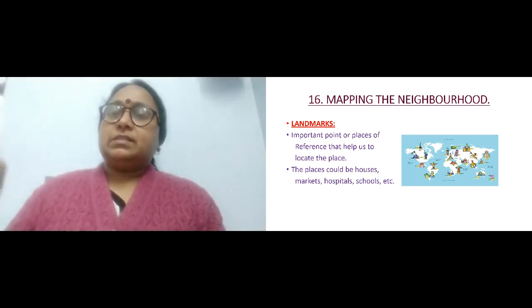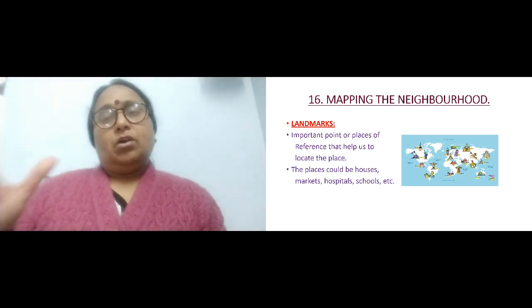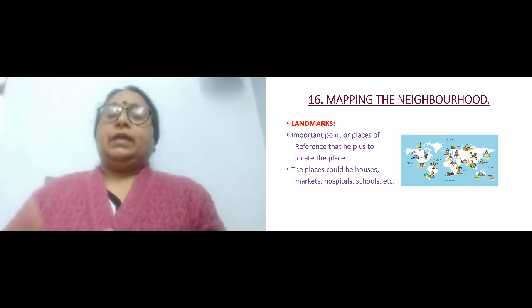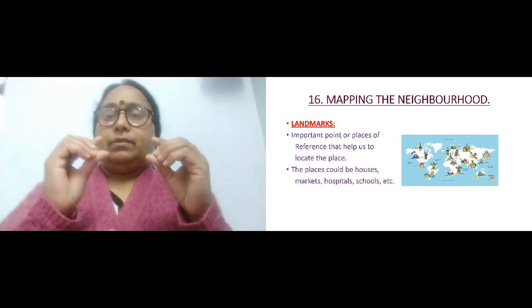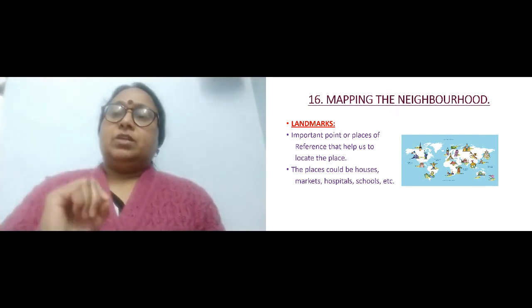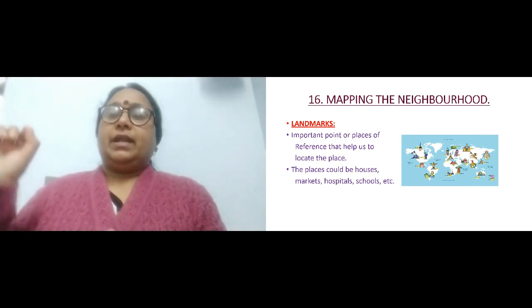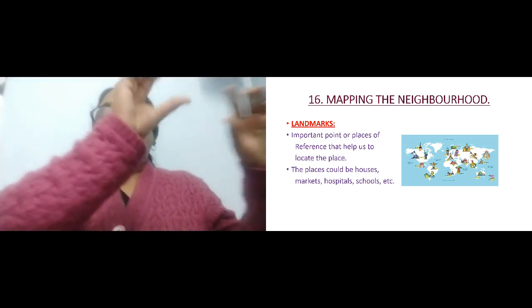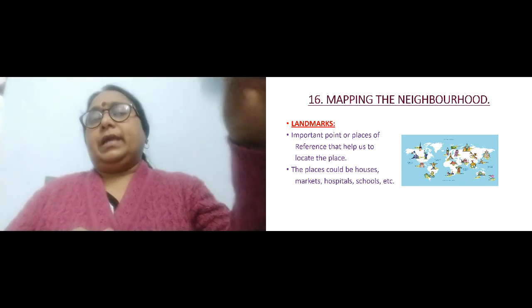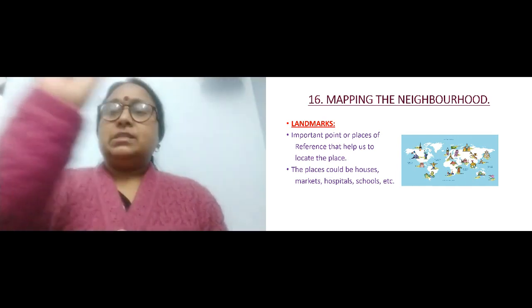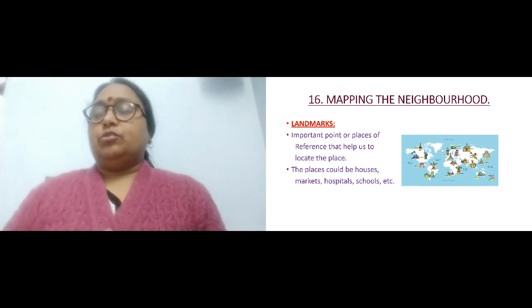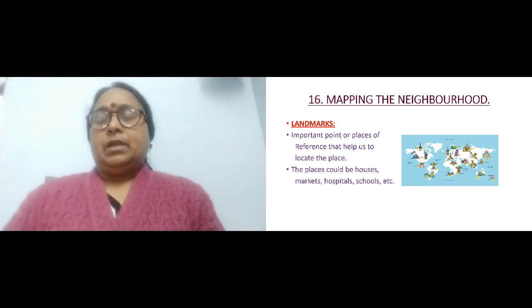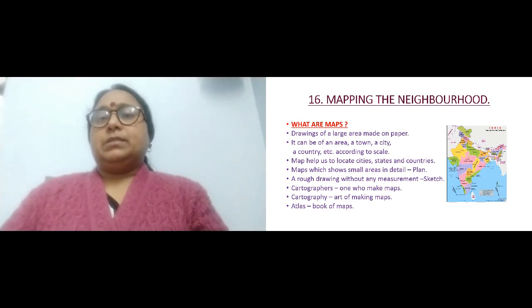Wherever a cross is shown, that means there is a hospital. For schools, you can mark a small figure of a kid with a bag. For a big landmark you can mark a star. In one corner of the map you write the legend: a star means school, a square means market, a cross means hospital. So each place just needs a symbol — that is the landmark — and it makes the map easy to read.